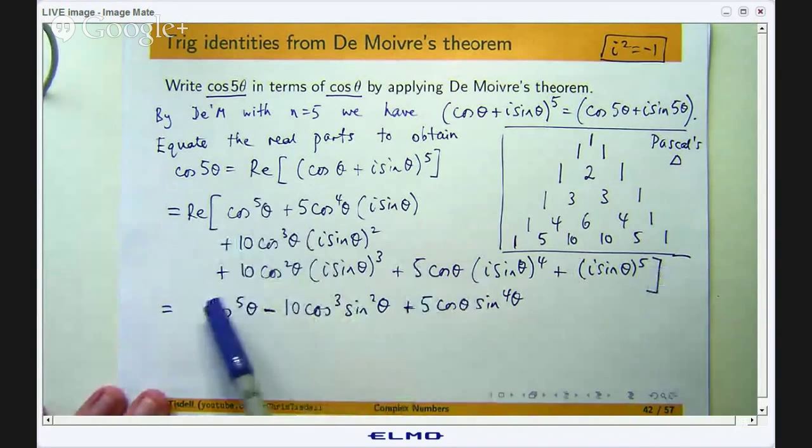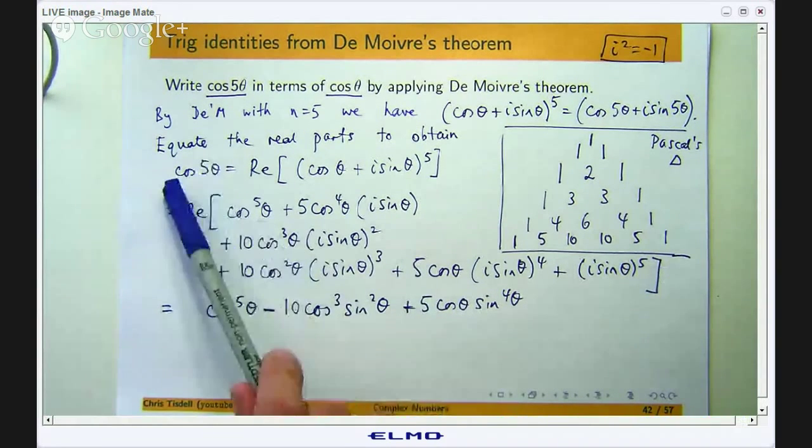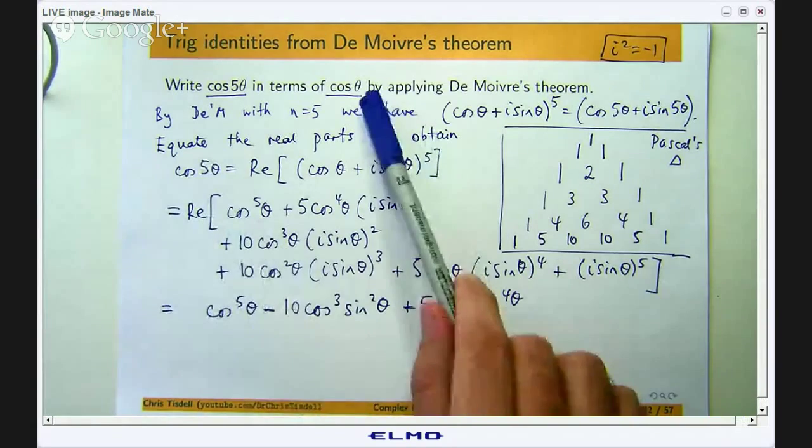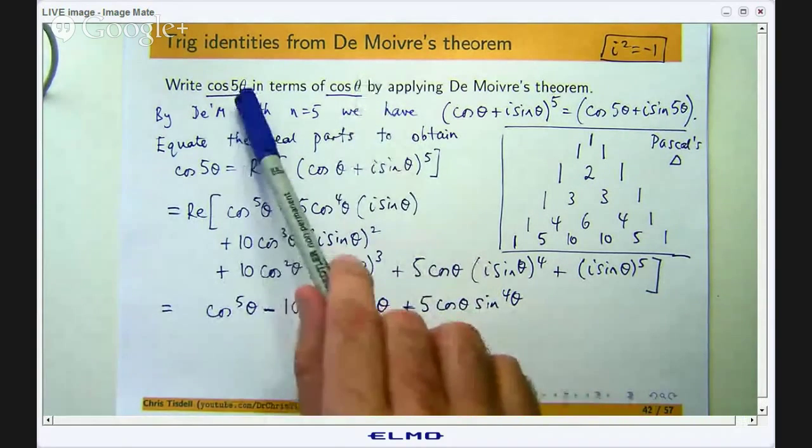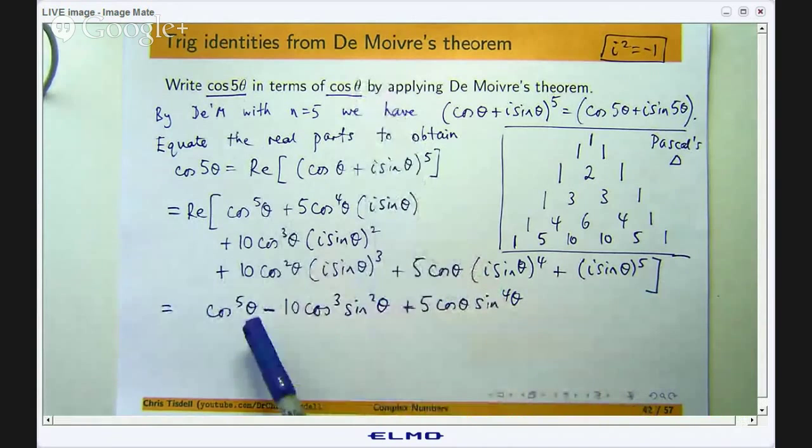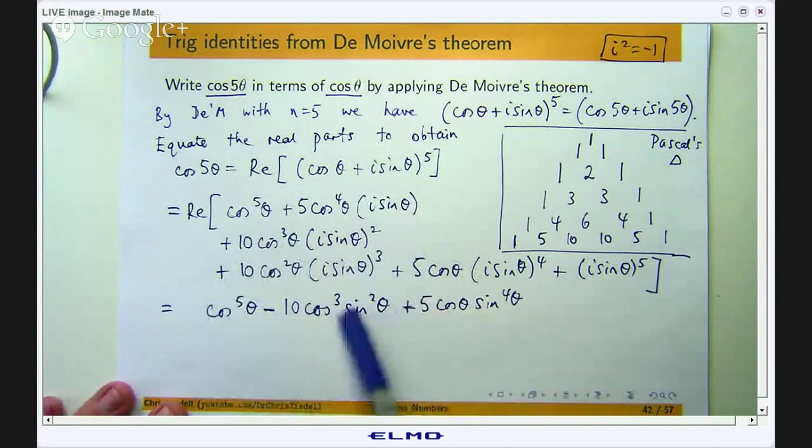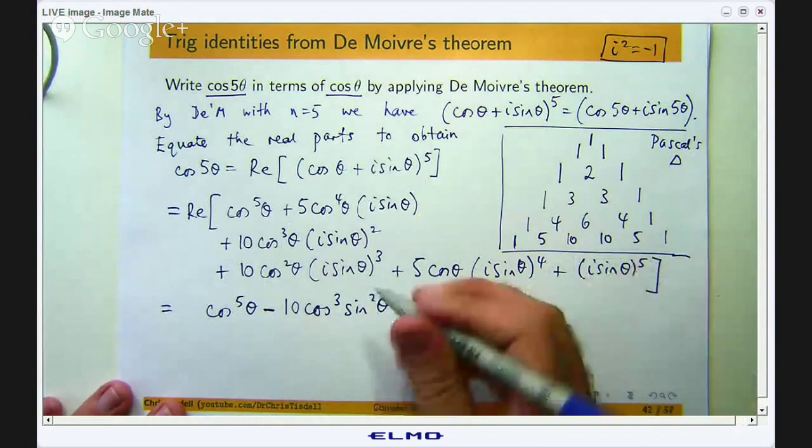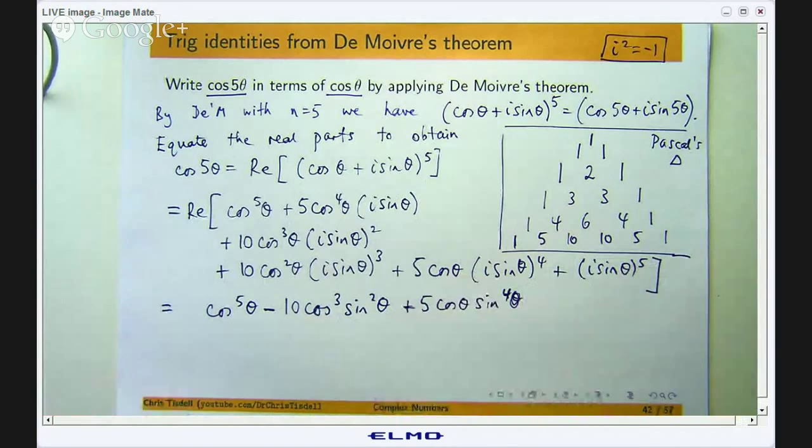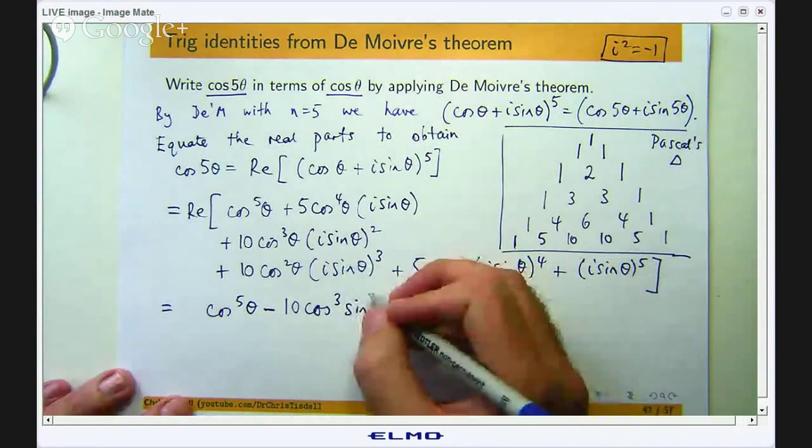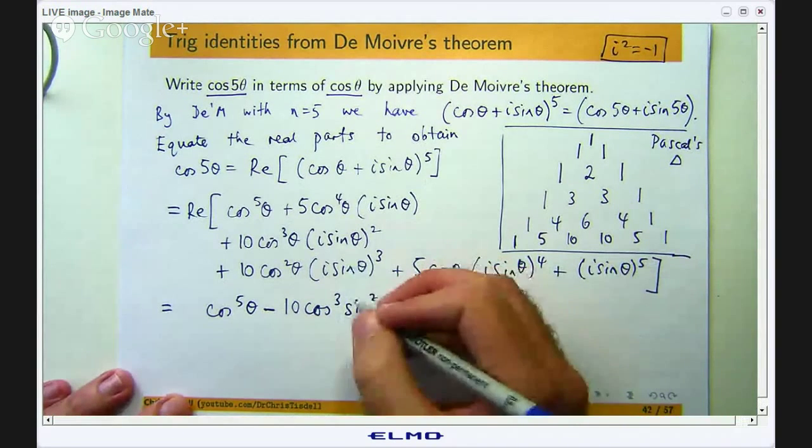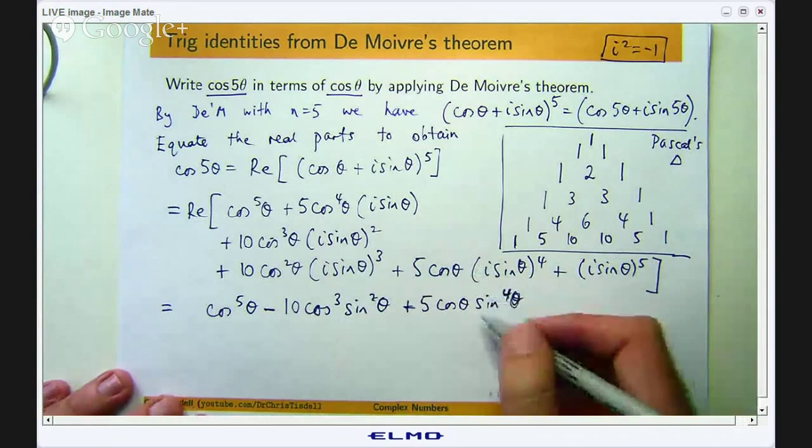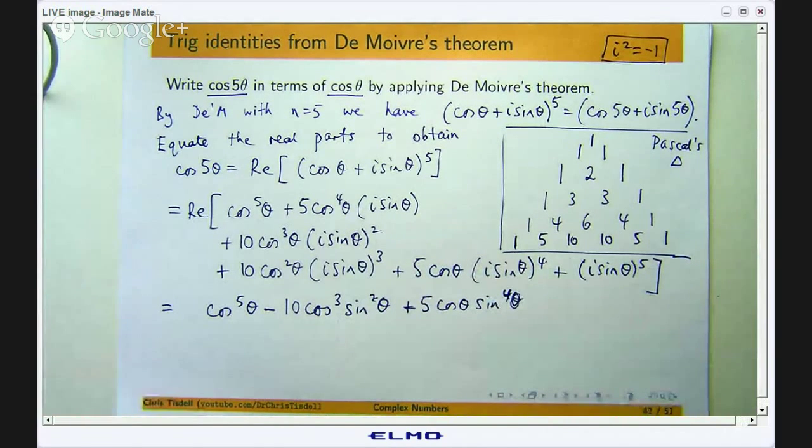Alright, so I have basically gone from this mess to three terms. So I do have an identity now, but it is not quite in the form that we are asked to get it in. We want cos 5θ in terms of cos θ, right? So that is in terms of cos θ, this is not and this is not, but what we can do is replace sin squared with 1 minus cos squared. I can replace sin squared with 1 minus cos squared here and this is sin squared all squared, so I can replace sin squared with 1 minus cos squared all squared.